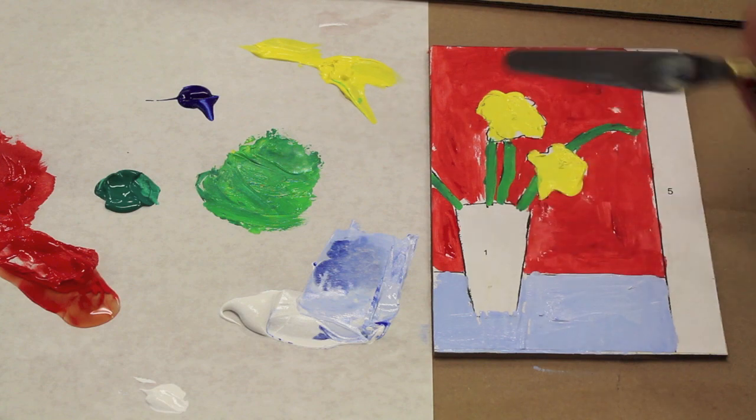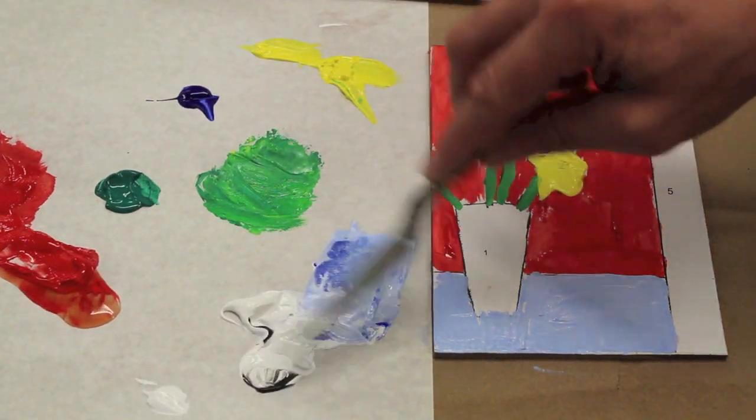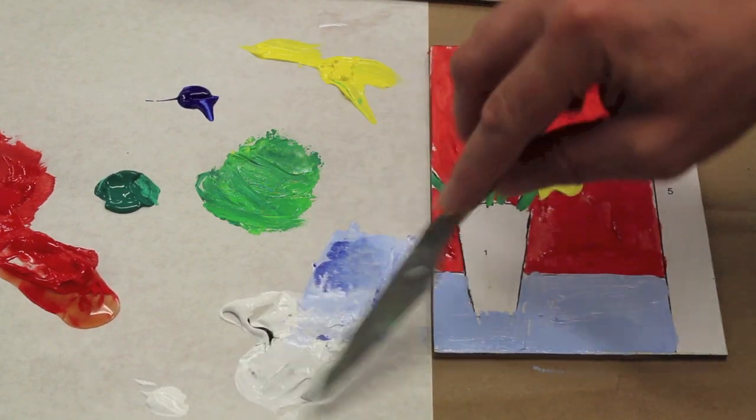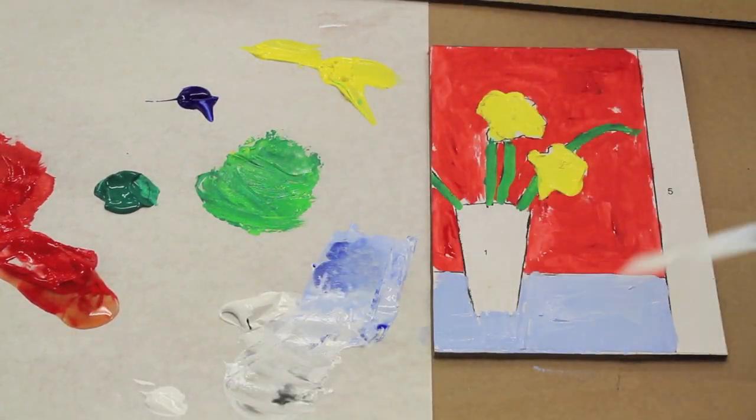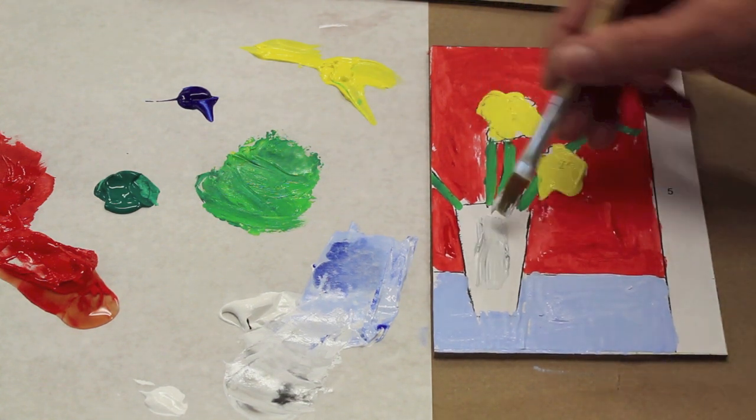Now move on to the glass, or the vase. I'll use just a little bit of black and some white. You get kind of a gray color—I guess black and white makes gray—and paint that in.